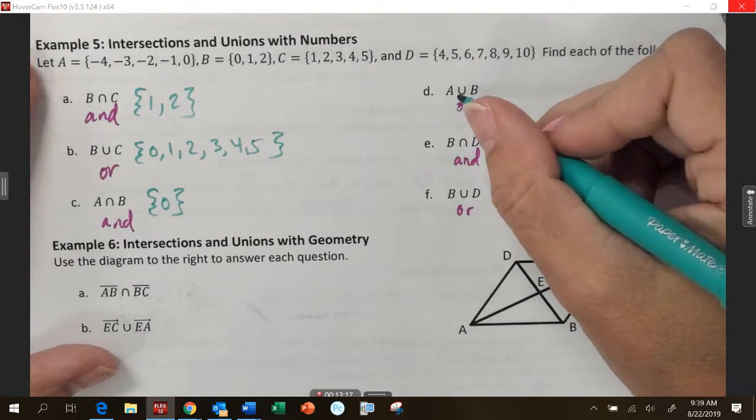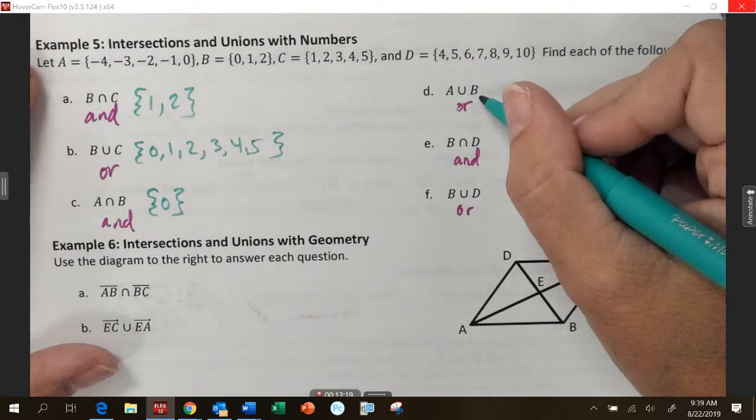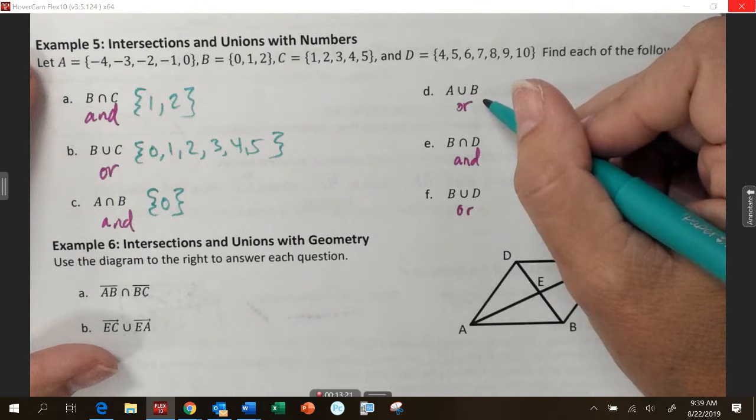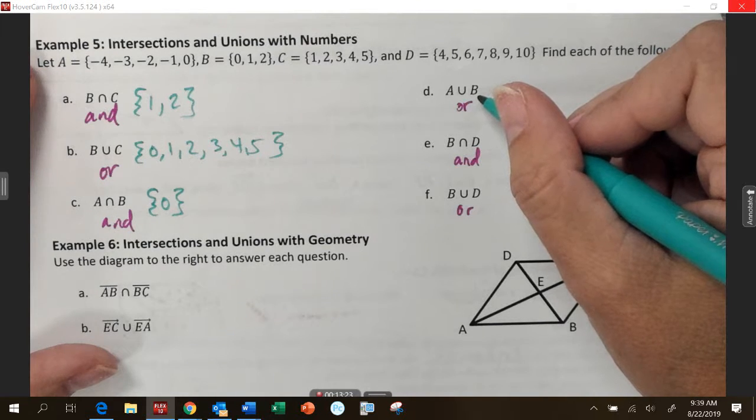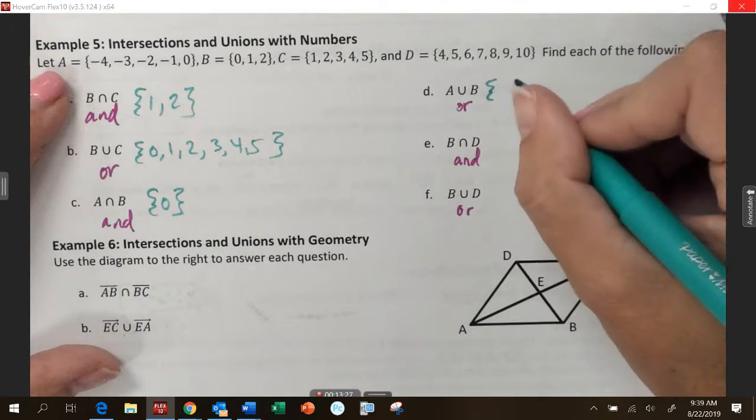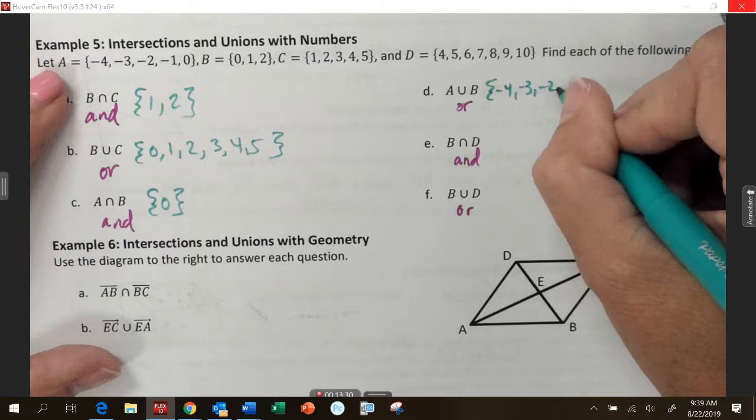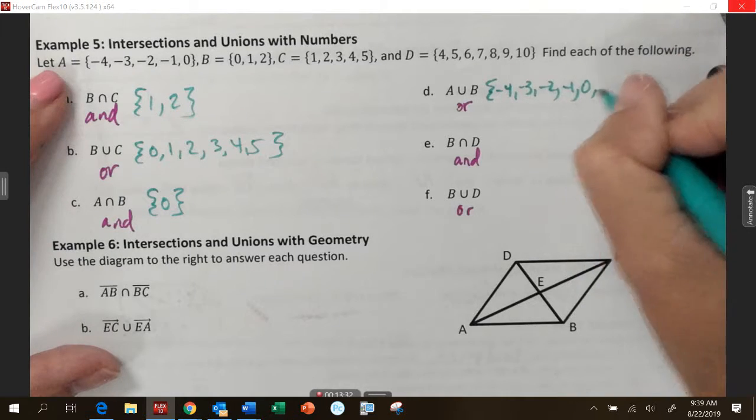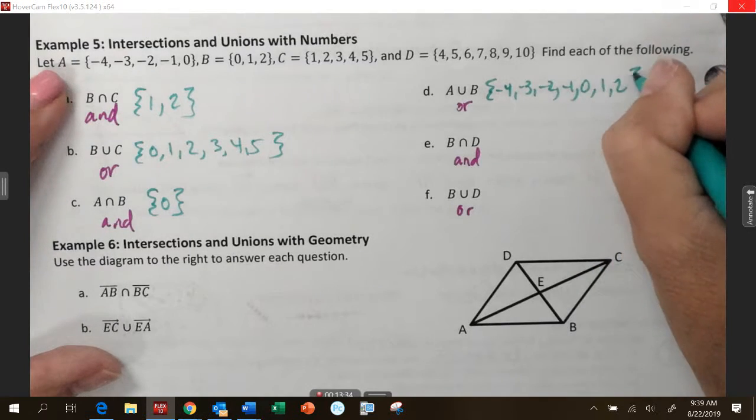D. A union B. So, this could be either or. We're putting everybody together. We're uniting them. A and B. In numerical order. Negative four. Negative three. Negative two. Negative one. Zero. One. Two. Bless you.